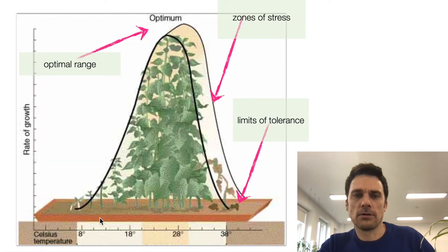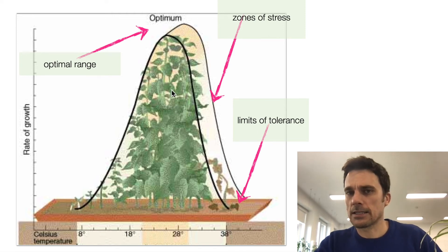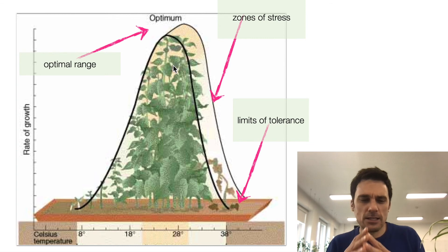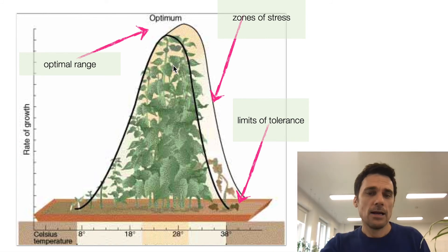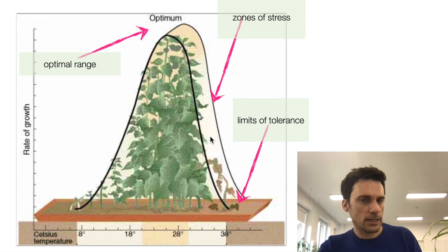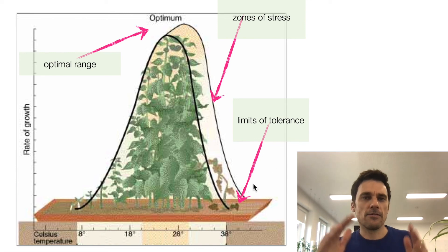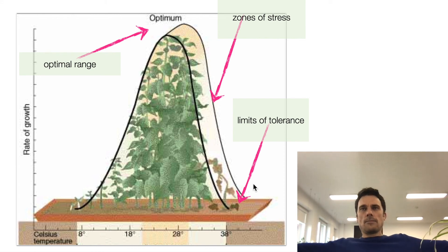Here's a practical example of limiting factors when talking about plants. There's some key terminology — we're trying to find the optimal range: the perfect range of temperature, soil pH, soil type, and amount of water. If you're a farmer, you need to know these things because you want the biggest plants. What stresses them in terms of nutrients? What factors limit their growth? Some plants have a very narrow band where they can grow, while others can grow almost everywhere — they have fewer limiting factors.